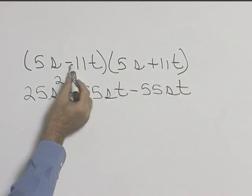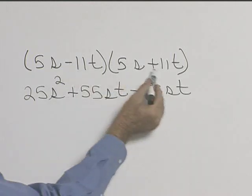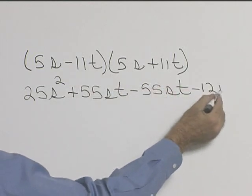And then our last term we'll have negative 11t and positive 11t. Well that'll be negative 121t squared.